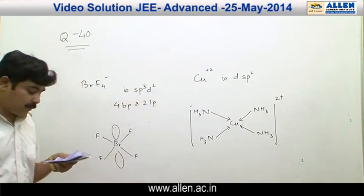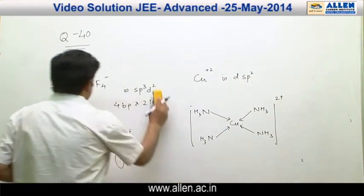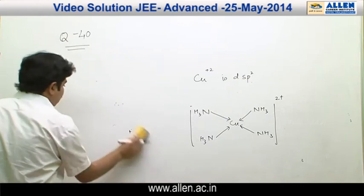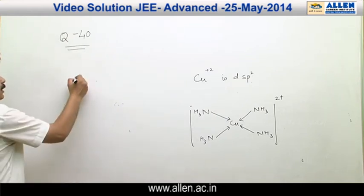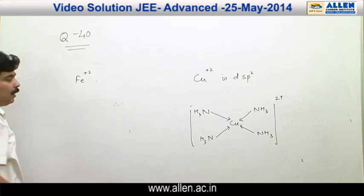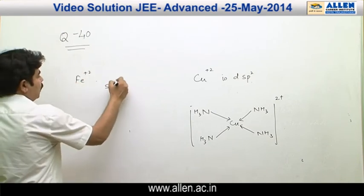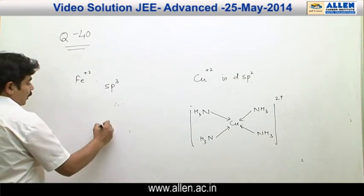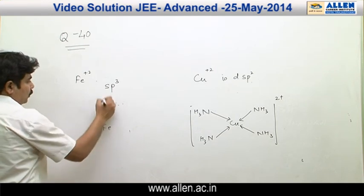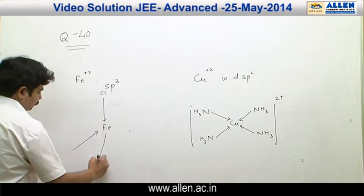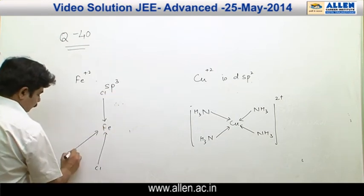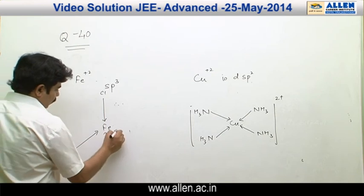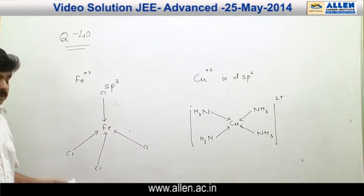Another option is FeCl₄²⁻. In FeCl₄²⁻, iron is in the +2 oxidation state and is SP³ hybridized due to the presence of a weak field ligand. Therefore, its shape is tetrahedral.